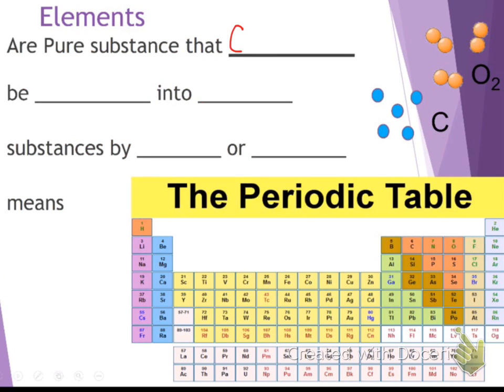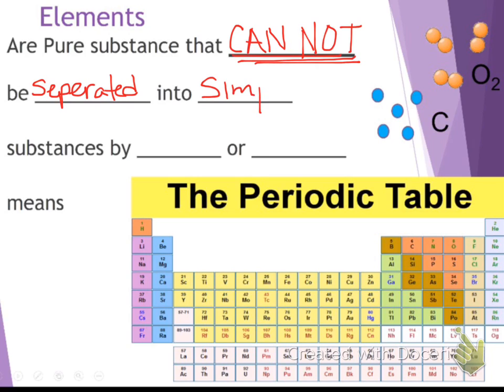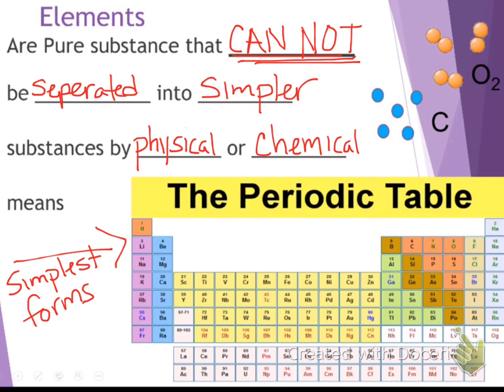Elements are pure substances that cannot be broken or separated into simpler substances by physical or chemical means. So these elements on this periodic table, they are in the simplest form. You cannot break them down any further. Carbon and oxygen, they're always carbon and oxygen. You can't break them down into something else.